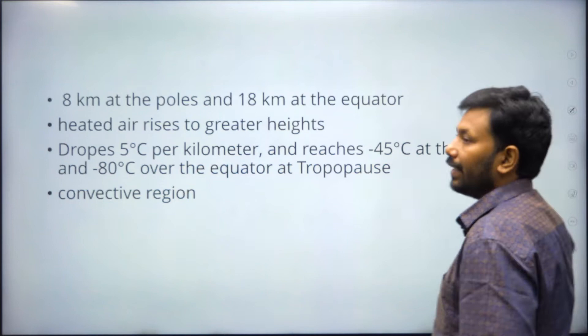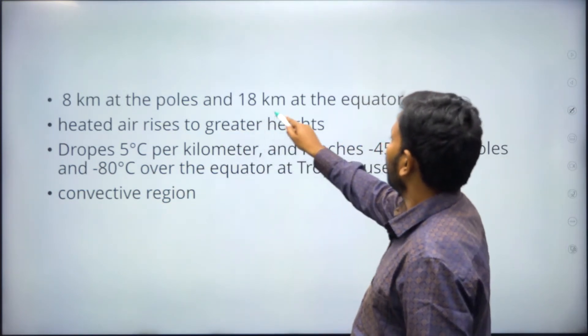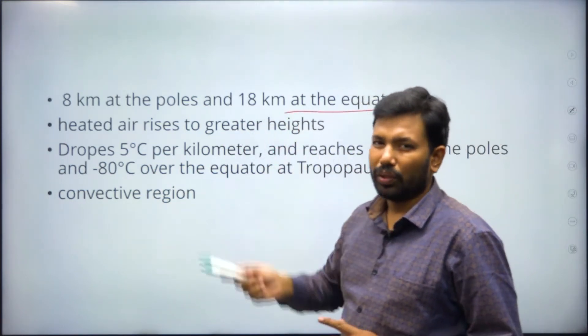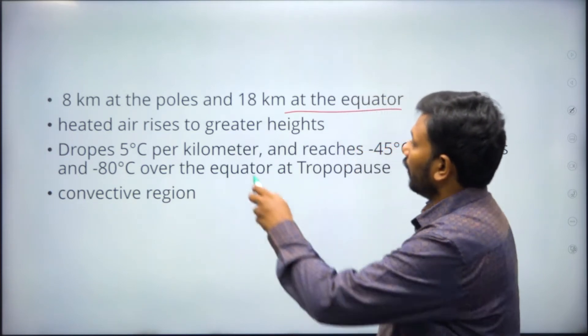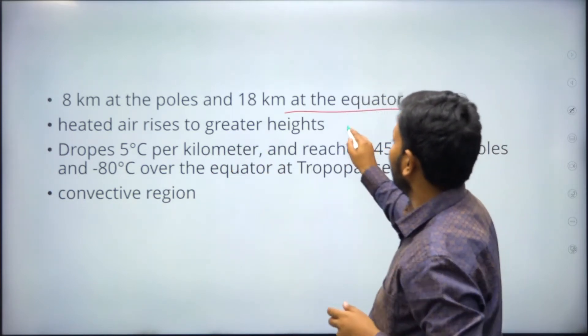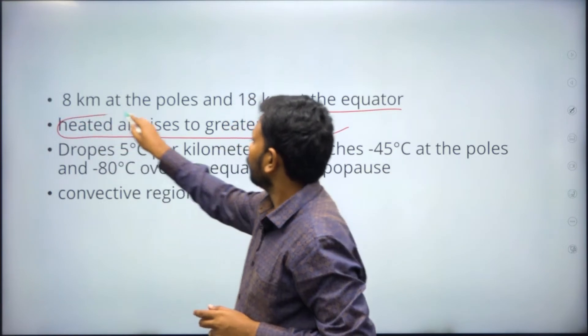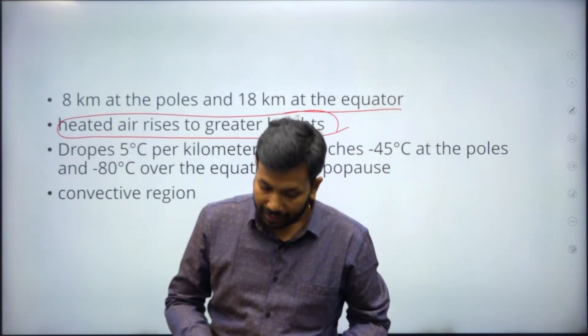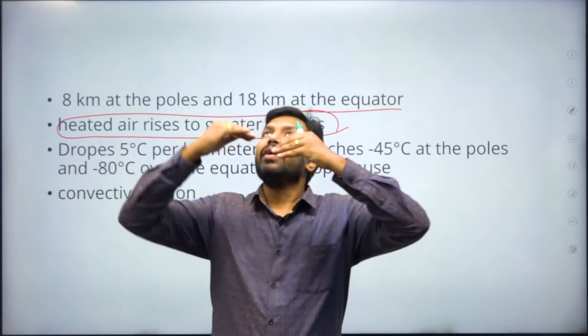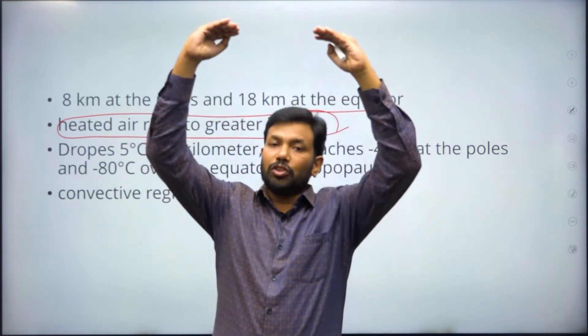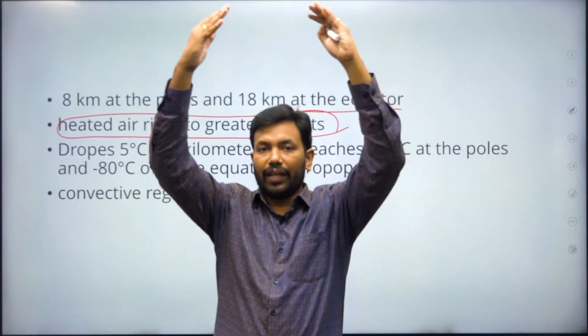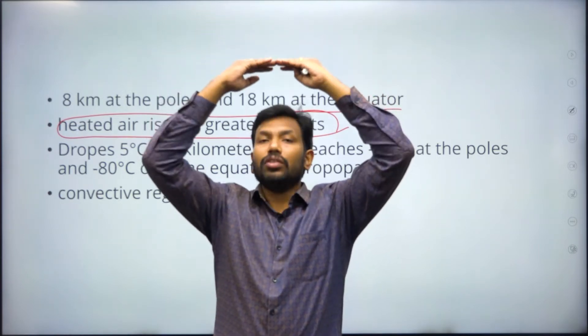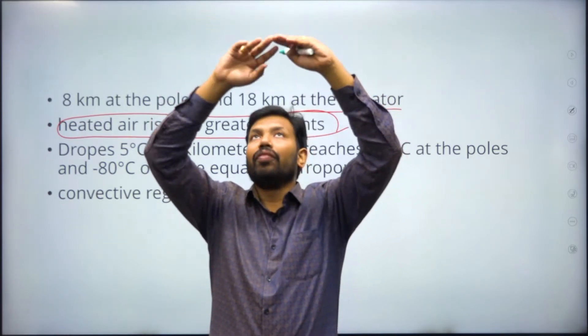It's 8 kilometers at the poles and 18 kilometers at the equator. Heated air rises to greater heights. This is where the logic is: whenever there is heat, air rises up. When air rises up, it goes to the uppermost point, which is called the troposphere ending.